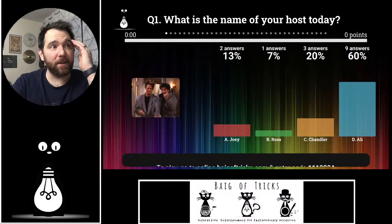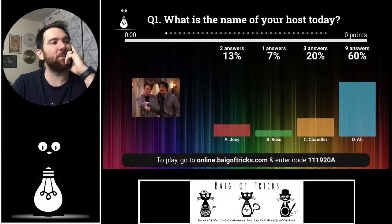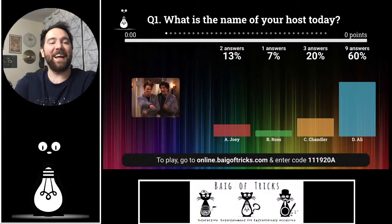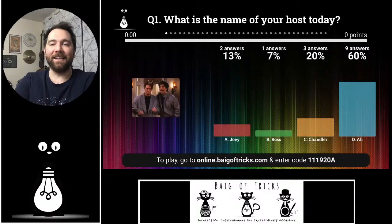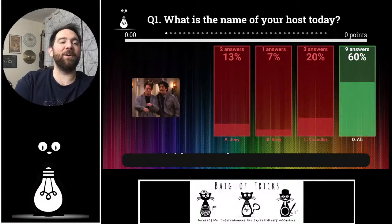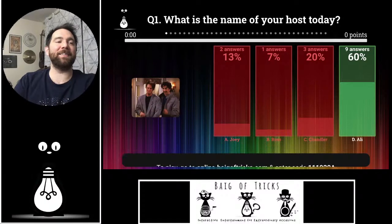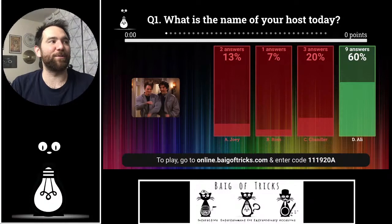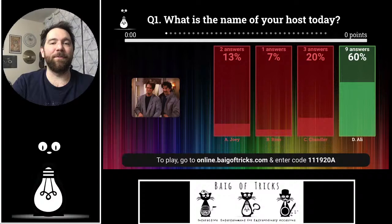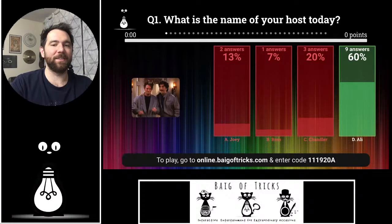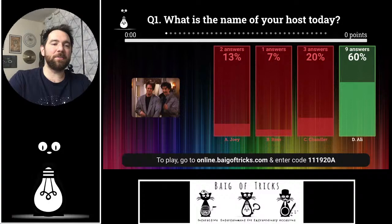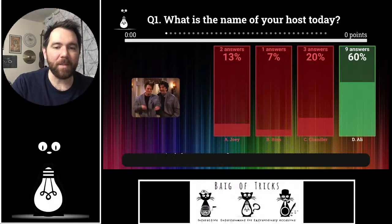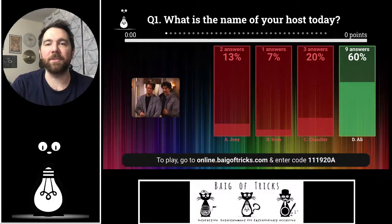Everybody's in. Two people said Joey, one person said Ross, three people said Chandler, and nine people said Ali. If this was worth points and you had answered Ali, you would be earning points. But from this point on, every single question is worth up to 150 points. Some of these are simple, some are tough, but you don't lose points if you're wrong.